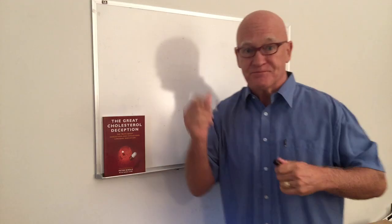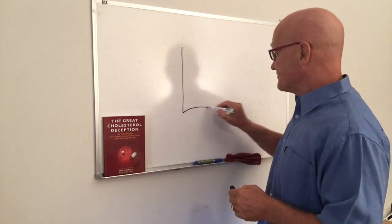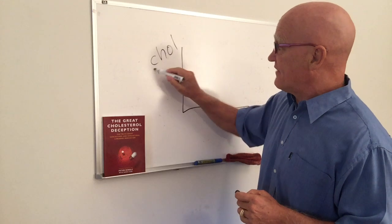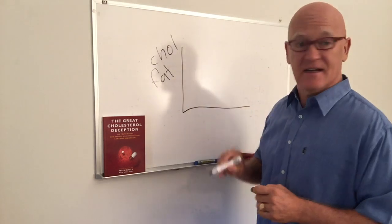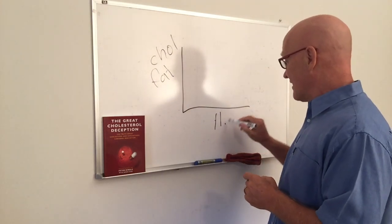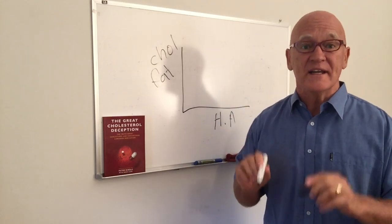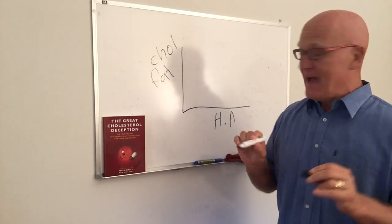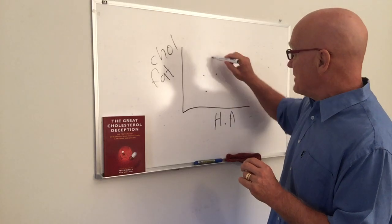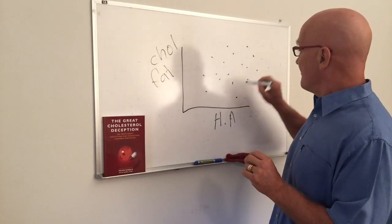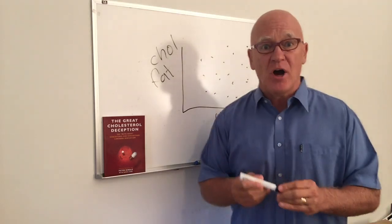OK, so really simply, here's a graph. This one is cholesterol and fat, and this one is heart attack. So what he did was he got 22 countries together and these 22 countries, they came up on the graph everywhere, absolutely everywhere. And he looked at it and he goes, hold on,